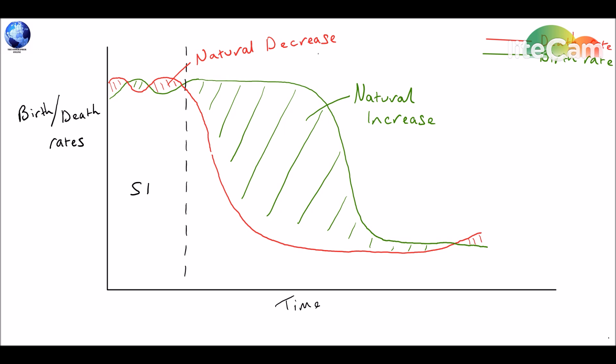Stage one occurs when you have high levels of both birth rate and death rate that fluctuate. So the population doesn't really change. It stays very stable, because you have alternative natural increase and natural decrease.